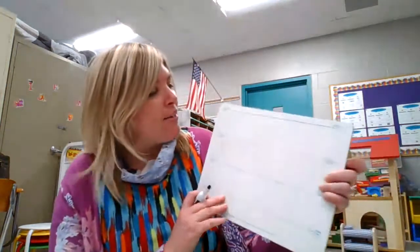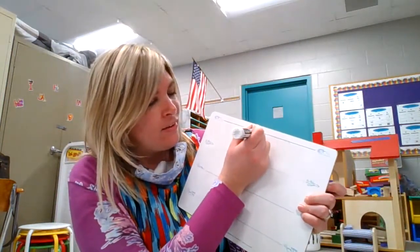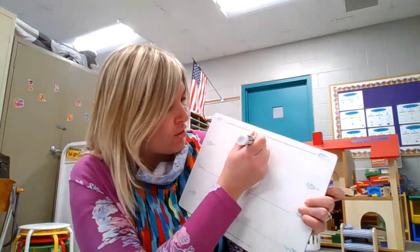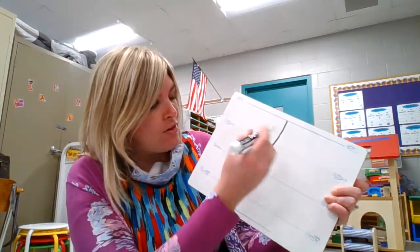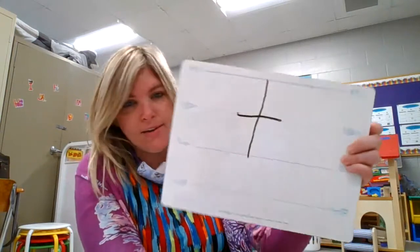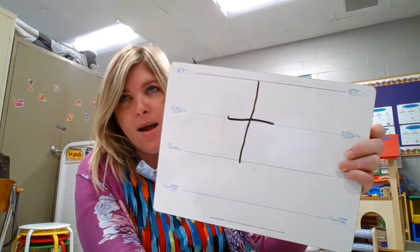The next letter is T — top, t. What line does T begin at? Very good — it begins at the skyline. A lot of you guys forget that. Start at the sky, go down to the grass, and then cross at the plain. T — top — t. Excellent!